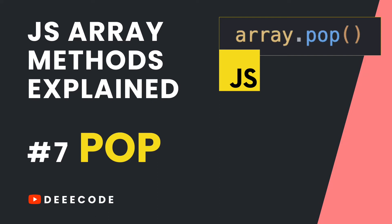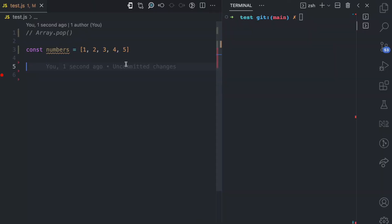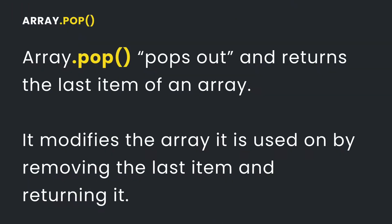Welcome to my YouTube channel where I simplify the web. In this video, part 7 of my JavaScript Array Methods Explained series, I'll be simplifying the pop array method. The pop method pops out and returns the last item of an array.